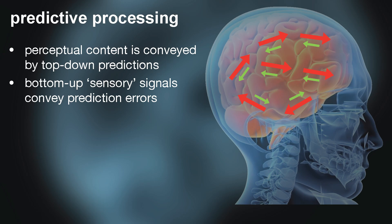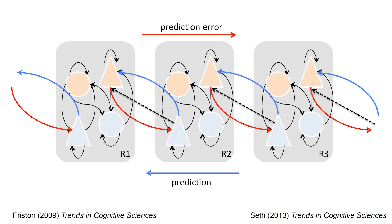If the brain is continually updating its predictions to try and get rid of these prediction error signals, that's what allows the brain to reach a best guess about the causes of its sensory signals. More formally, it means the brain is approximating something called Bayesian inference — making its optimal guess about the causes of the sensory data it receives. The basic idea is that prediction errors flow from the outside in or bottom-up, and predictions flow top-down or inside-out, and it's the combined content of the predictions that is what we perceive.